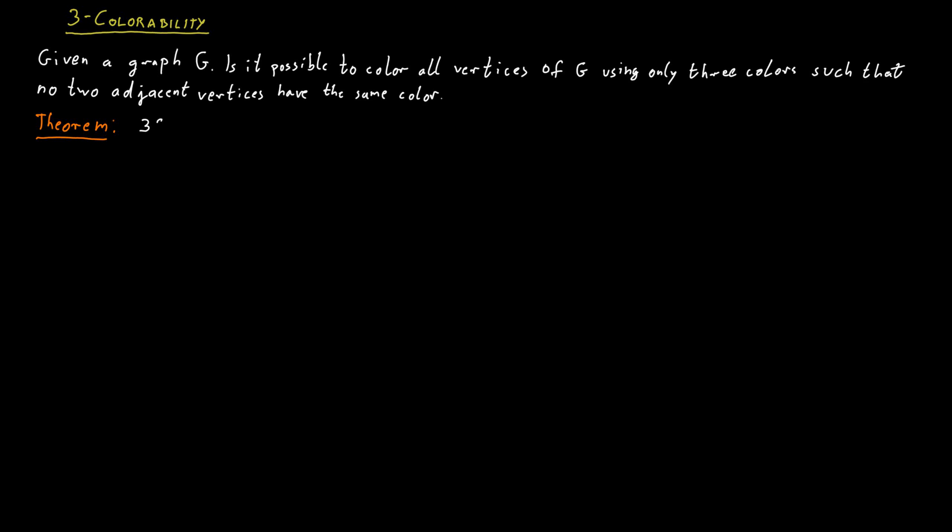I claim that 3SAT polynomial-time reduces to 3-Coloring. Given an input for 3SAT — that is, a Boolean formula — we construct an input for 3-Coloring: a graph that has the property of being 3-Colorable if and only if the Boolean formula was satisfiable.